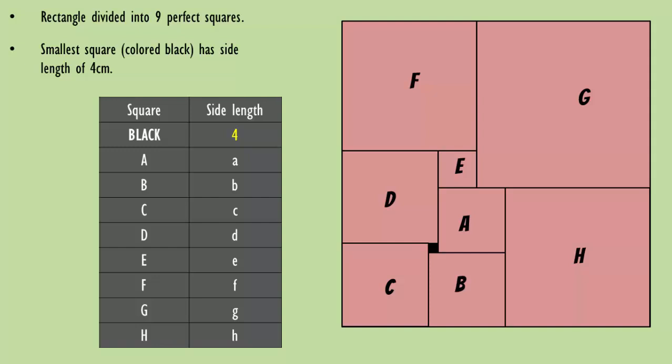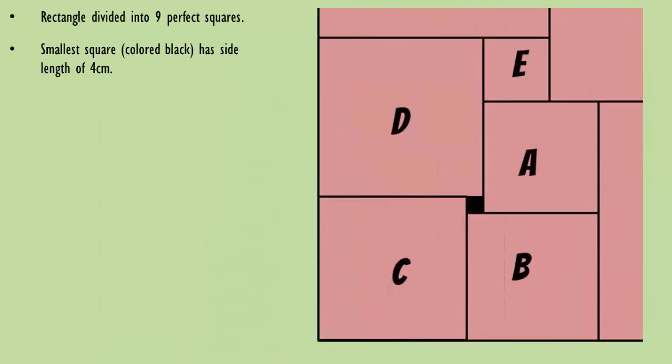Now, the only possible square to start the calculation with is the black colored square. Side length of square B should be equal to the side length of square A plus 4, and this is our equation 1. The same way, we can get the equation C equals B plus 4, and if we substitute the value of B from equation 1, we get the equation C equals A plus 8.